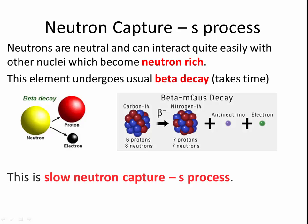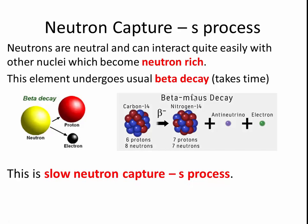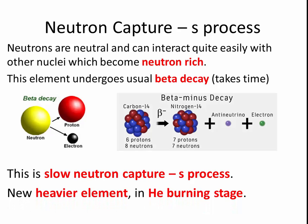So this is slow neutron capture followed by beta decay. It's a slow process, called an s-process. It basically means that you might be able to produce heavier elements in the helium burning stage. For example, the carbon that you manage to produce.